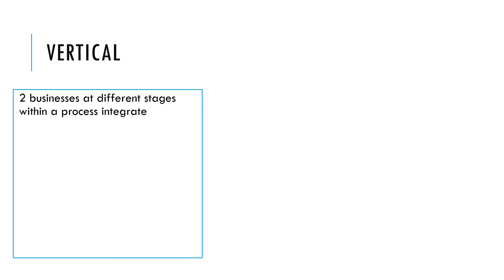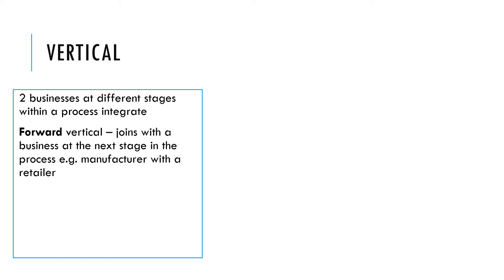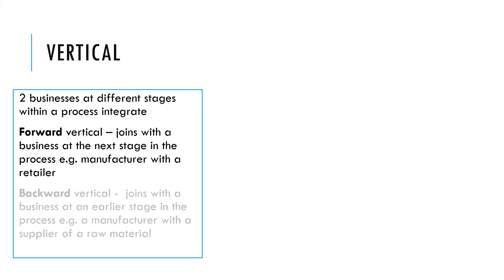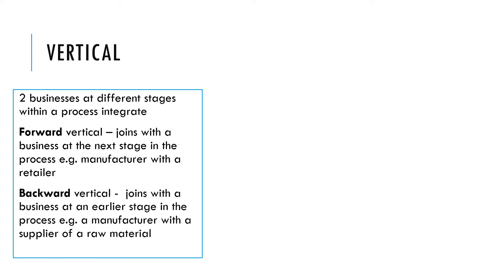Vertical mergers or takeovers are where the two businesses are at different stages of the process. This comes in two types: a forward vertical merger is when a business joins with another business at the next stage in the process, nearer the customer — for example, a manufacturer with a retailer. A backward vertical merger is when a business joins with another at an earlier stage, such as a manufacturer merging with a supplier of a raw material.